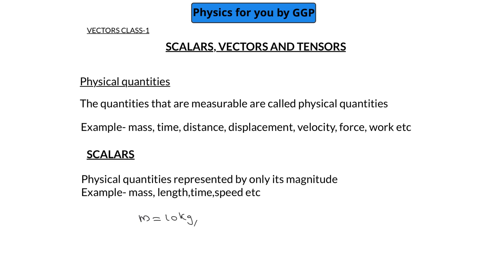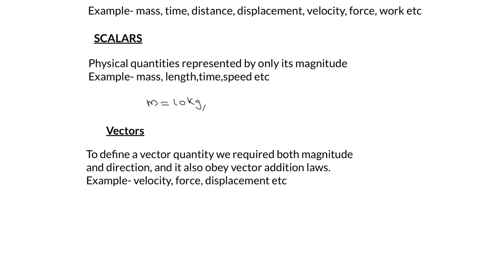To define a vector quantity, we require both magnitude and direction, and one more thing: it should obey the vector addition rule. We'll discuss vector addition rules in a coming topic. So to specify a vector quantity, we need to specify both its magnitude as well as its direction.